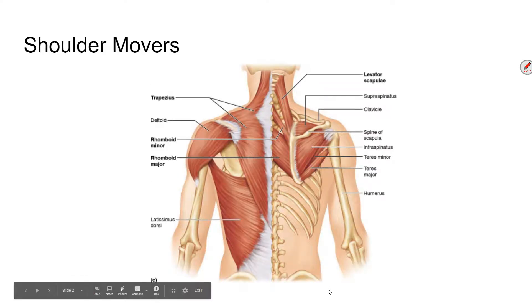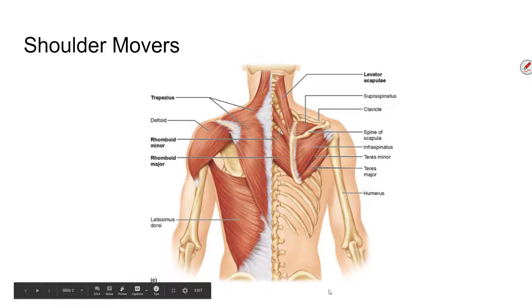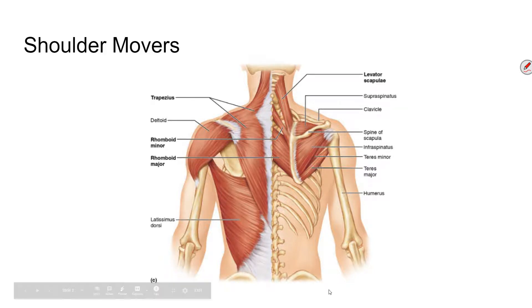I've labeled these as movers — I think that's the best way to understand them. These are muscles that are moving the shoulder and by default moving the whole arm, the upper arm and the lower arm. I'm going to name four of them, and two of them are kind of the same group.